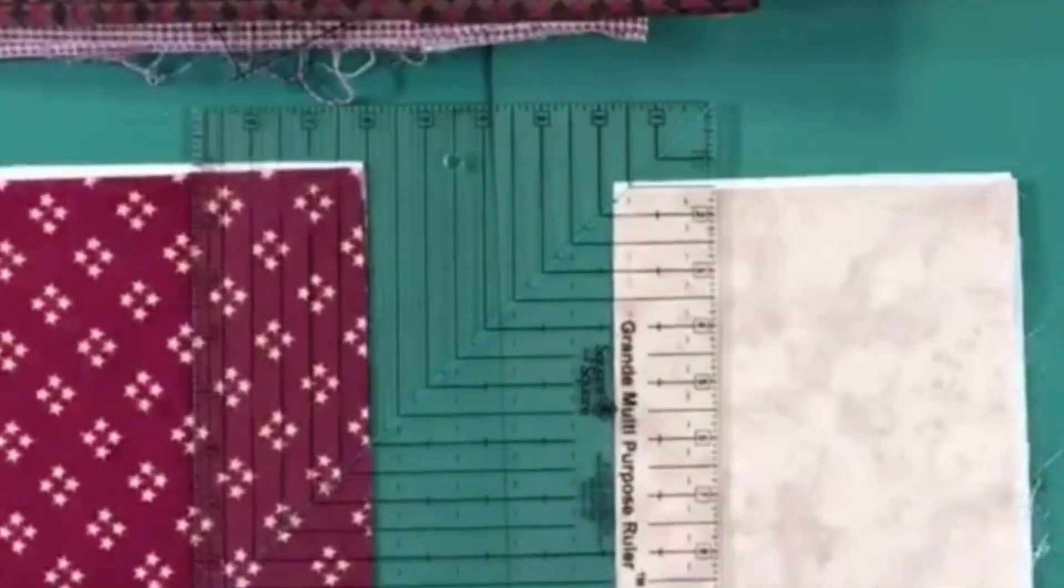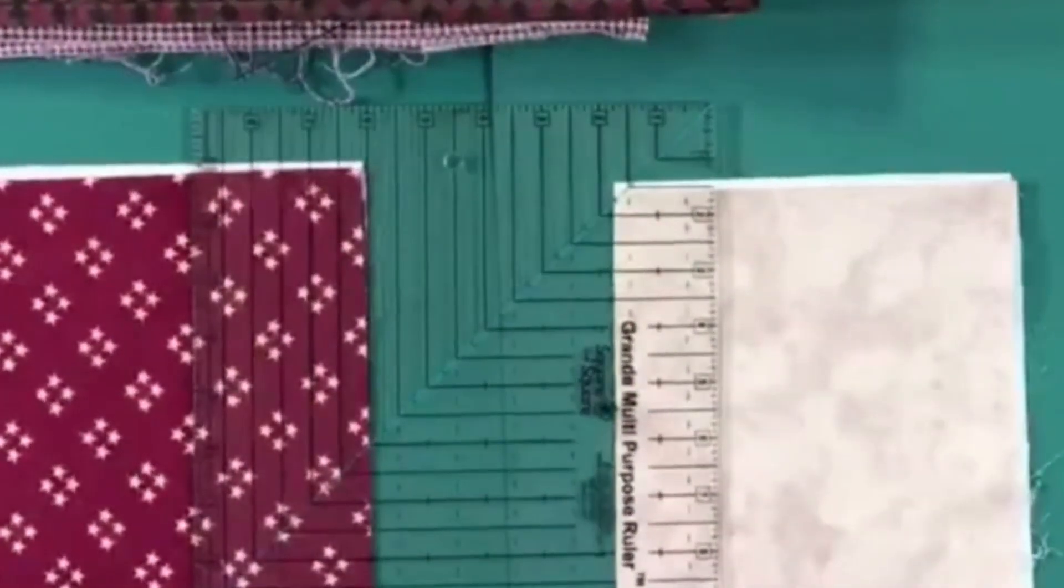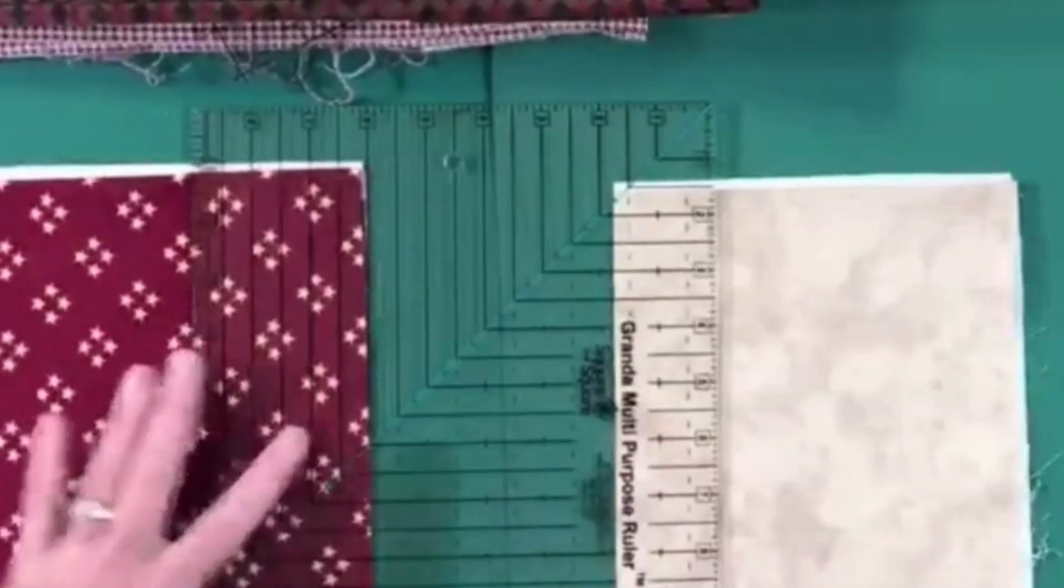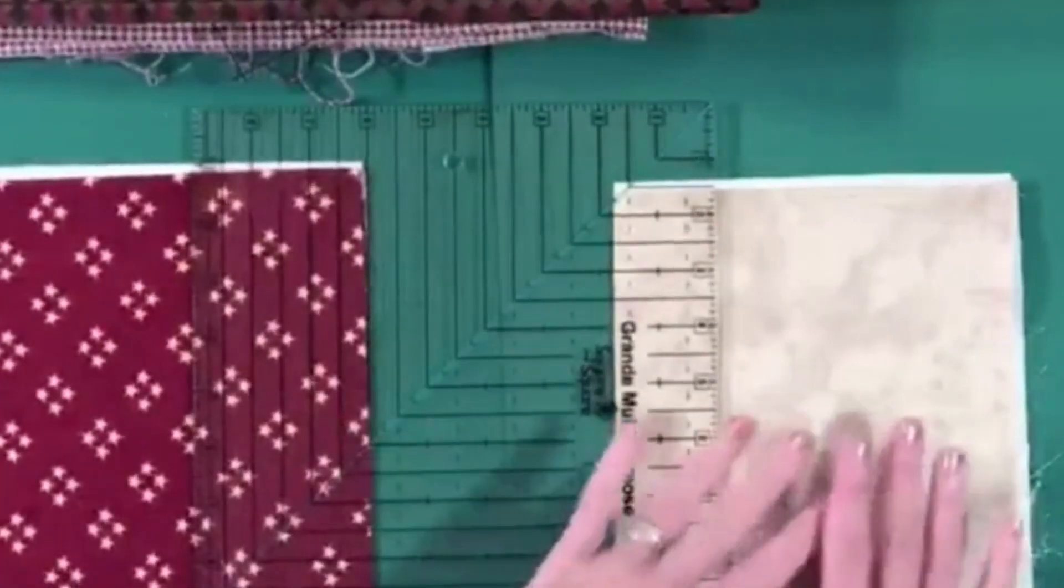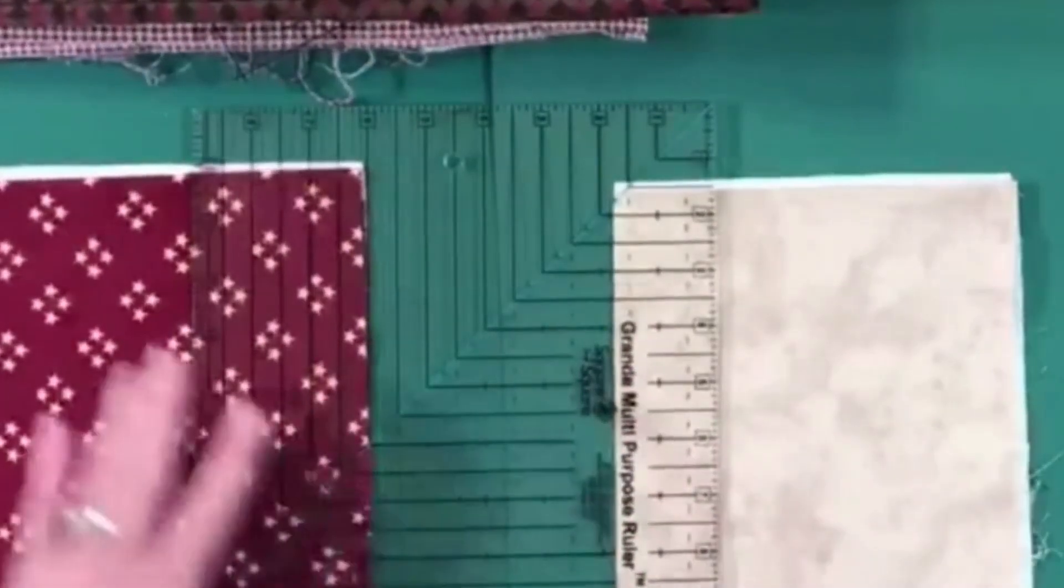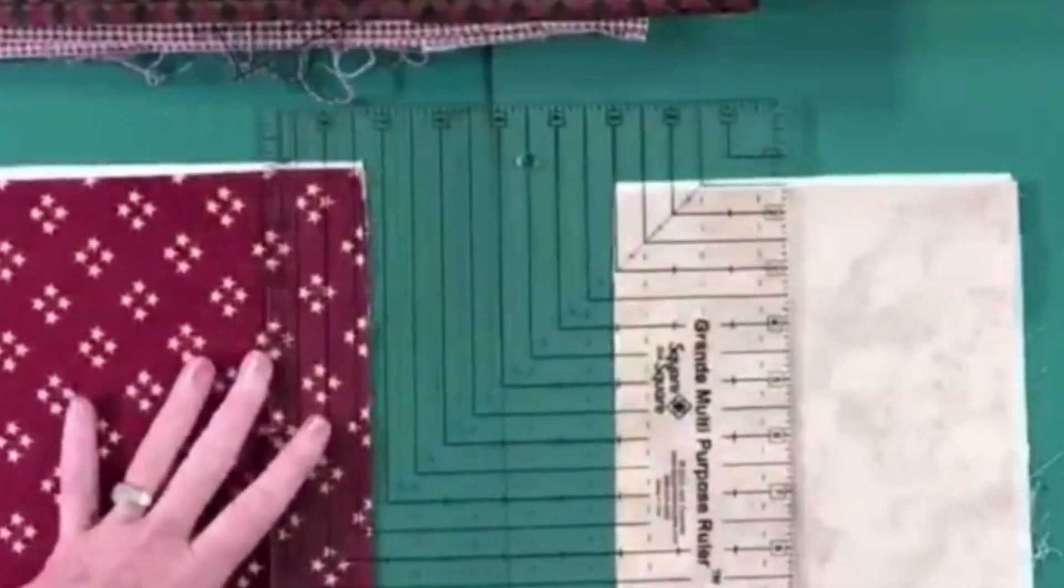These are going to be my center squares. I want my center squares to be my solid, more white color because when I put my ruler on here to trim, you're going to be able to see it much easier. So I'm going to back it back over here to three inches.